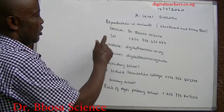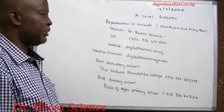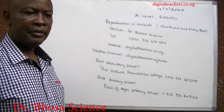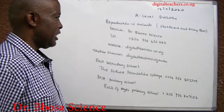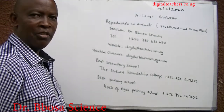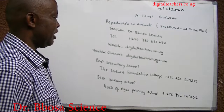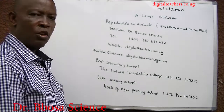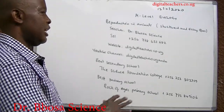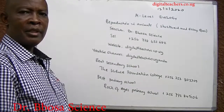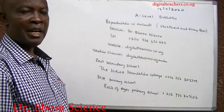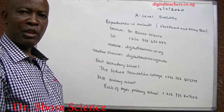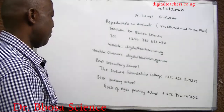Your teacher is Dr. Bosa Science, telephone plus 256-778-633-682. Website: www.dictoteachers.co.yugi. Here find the notes, take exams and their marking guides in physics, chemistry, biology and math.